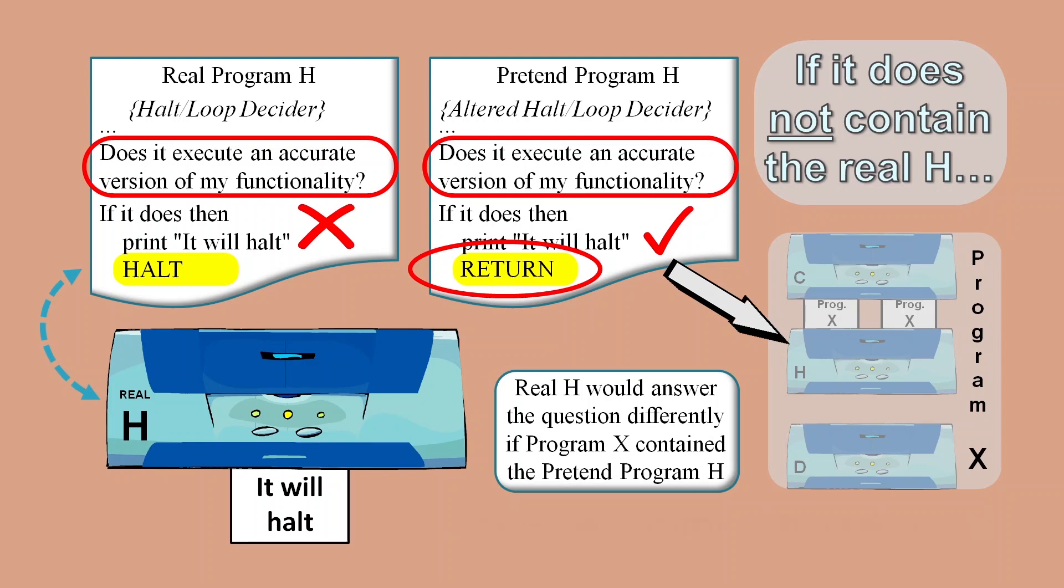It seems to be impossible to construct a properly working program X that can contradict a real program H, and so the argument that a working H could be contradicted appears to be flawed.